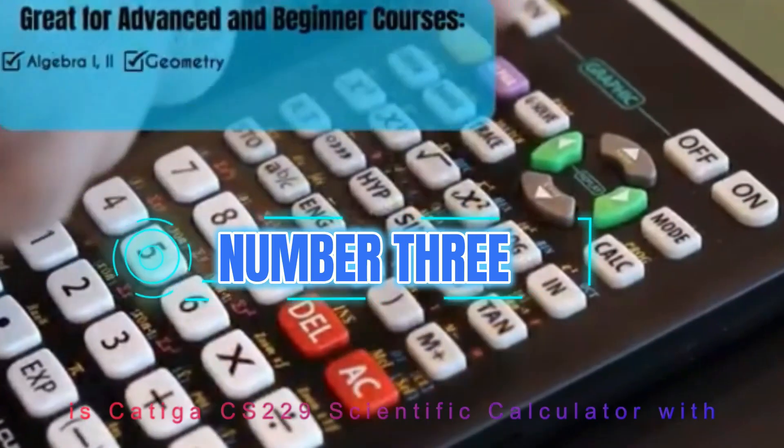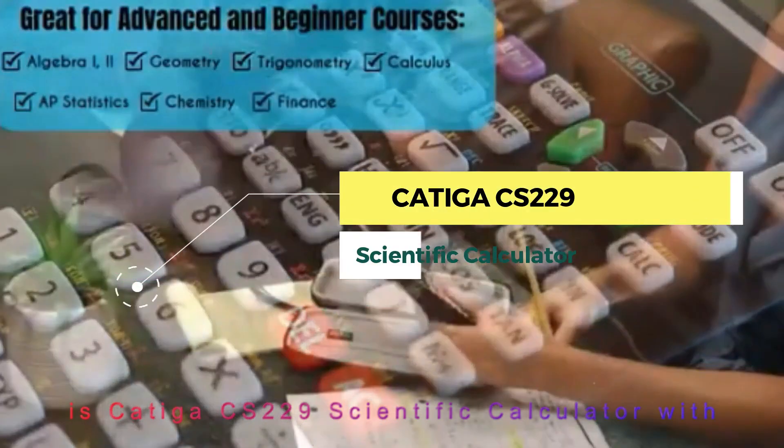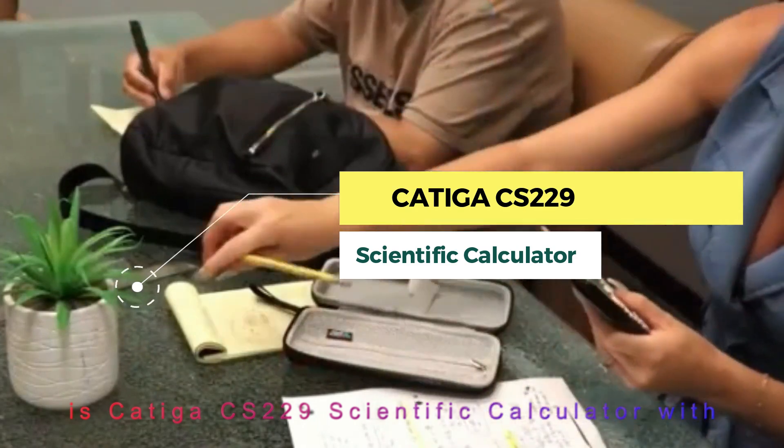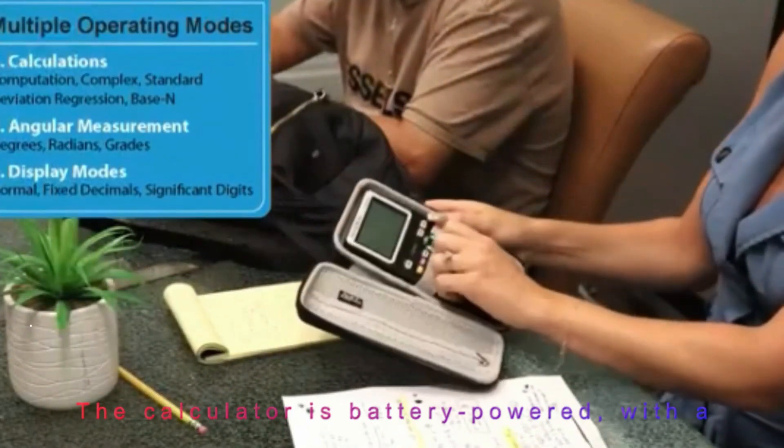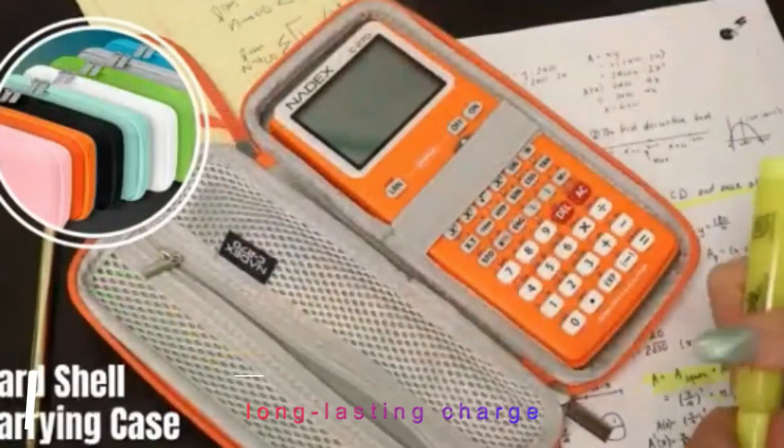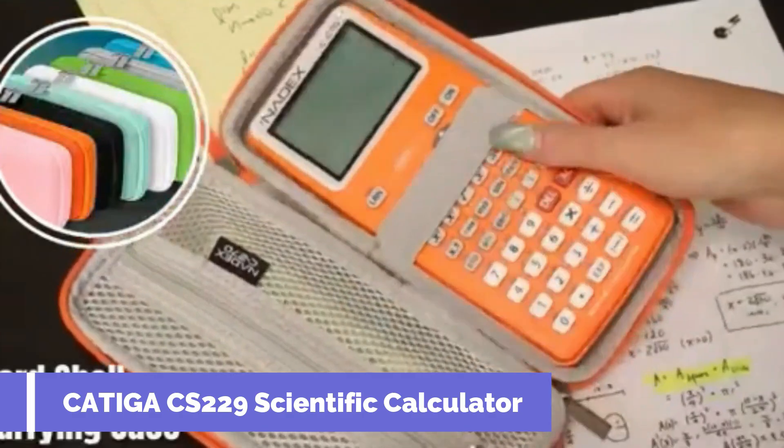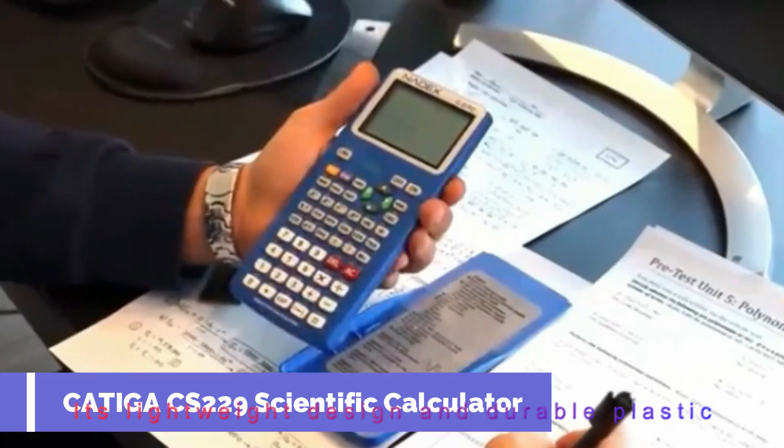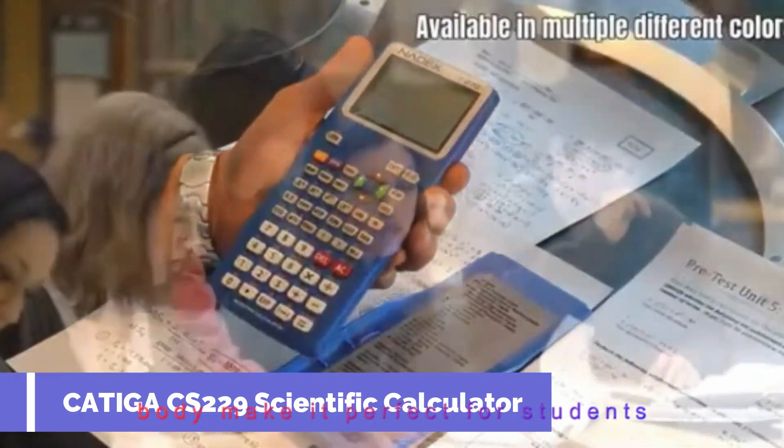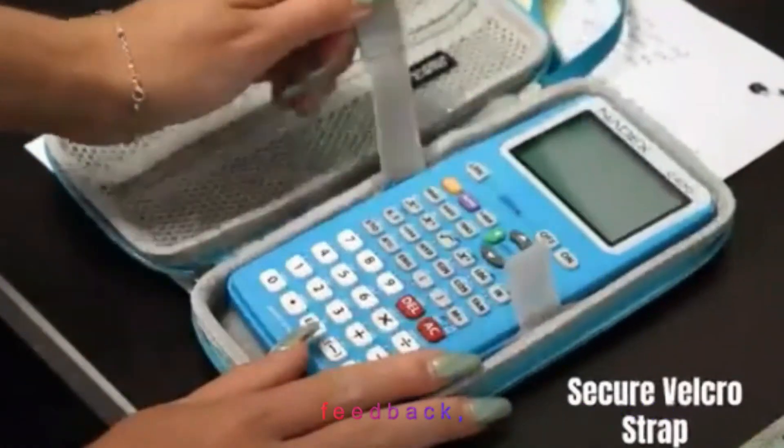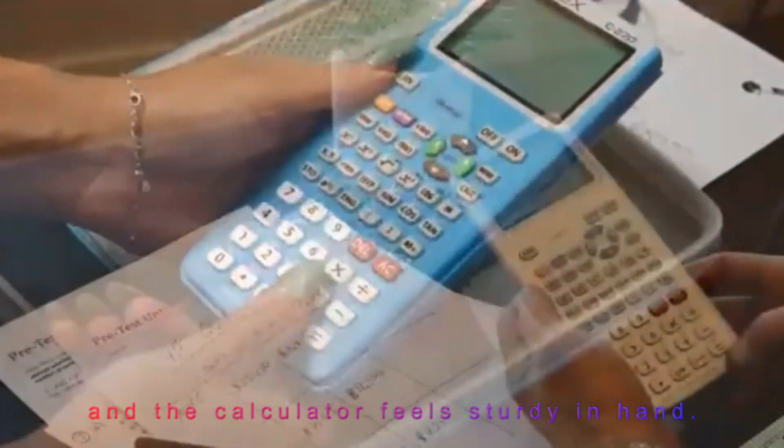Third in our list is Katiga CS229 Scientific Calculator with graphics functions. The calculator is battery-powered, with a long-lasting charge that easily gets you through a semester or more. Its lightweight design and durable plastic body make it perfect for students constantly on the go. The buttons have a satisfying tactile feedback, and the calculator feels sturdy in hand.